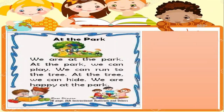So now let's understand this text. Jom kita fahami text ni. First, at the park — apa bermaksud park? Park bermaksud taman. Yang ni lah gambar ni, awak boleh rujuk. Taman. So dekat sana awak boleh jogging, awak boleh main. So this is the park.